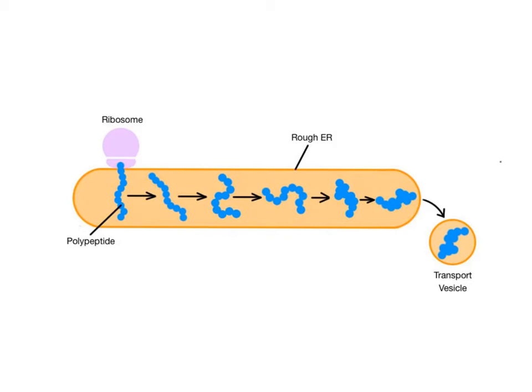Both ERs function as biochemical synthesis factories. The ribosomes on the rough ER play a major role in protein synthesis. The rough ER accepts the protein into its tubules and then processes and modifies the protein before it packages it in a transport vesicle and sends it into the cytoplasm.